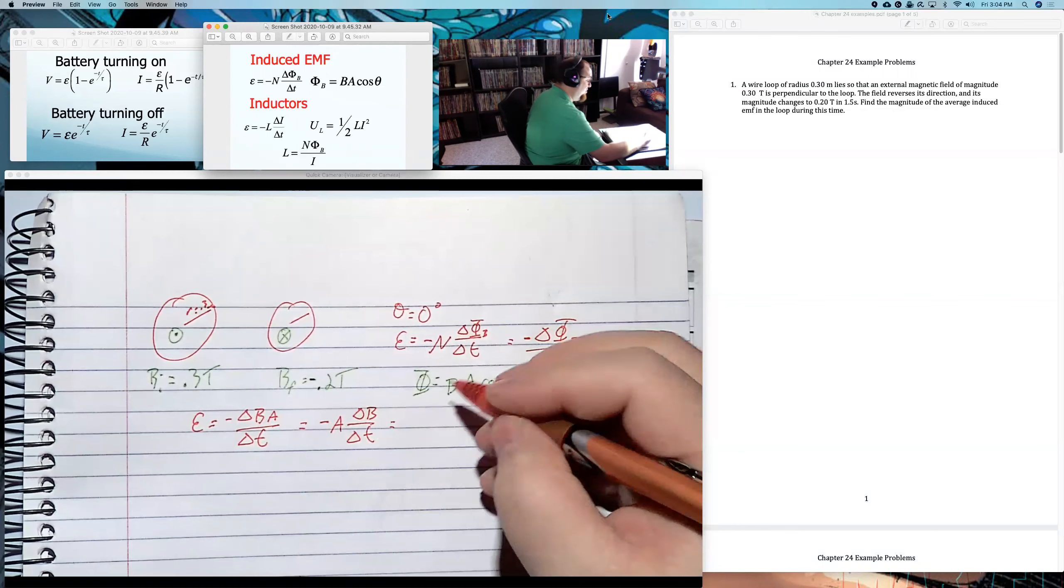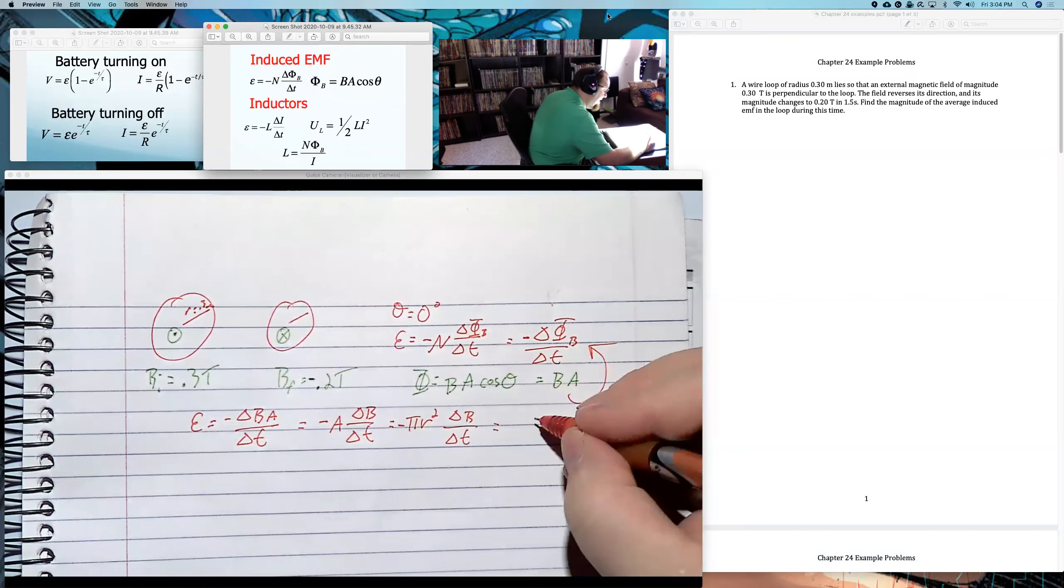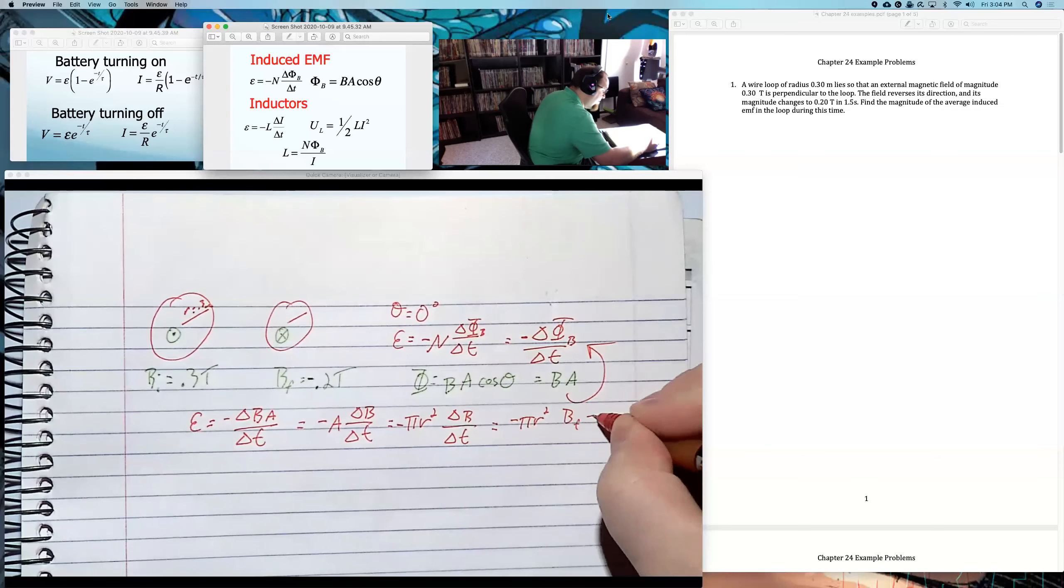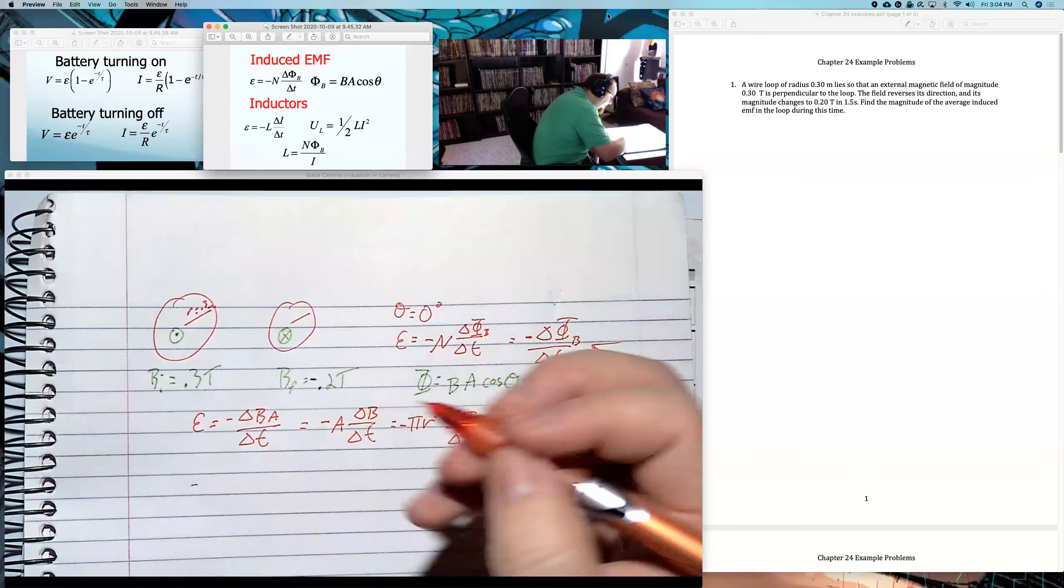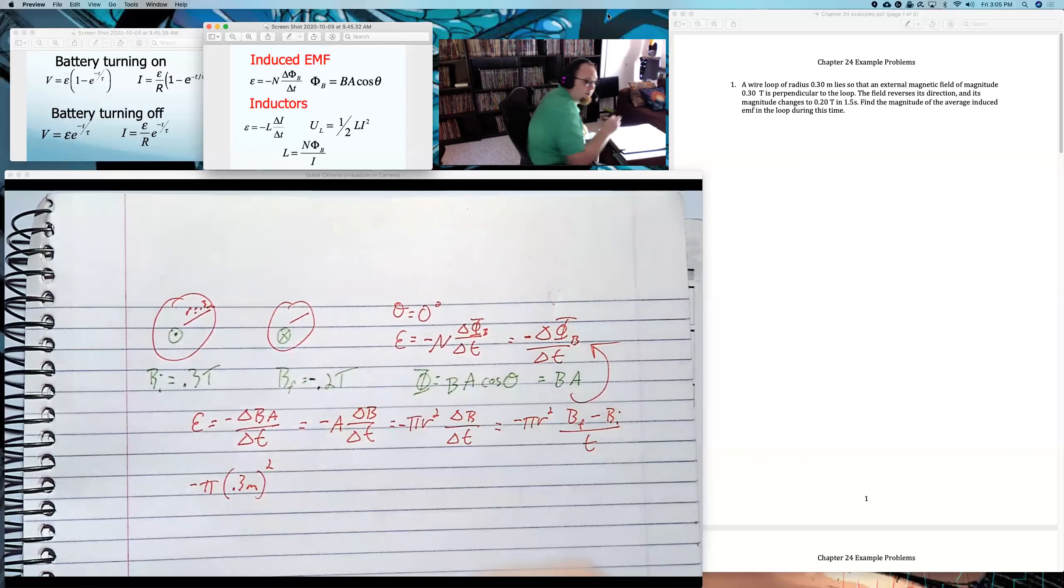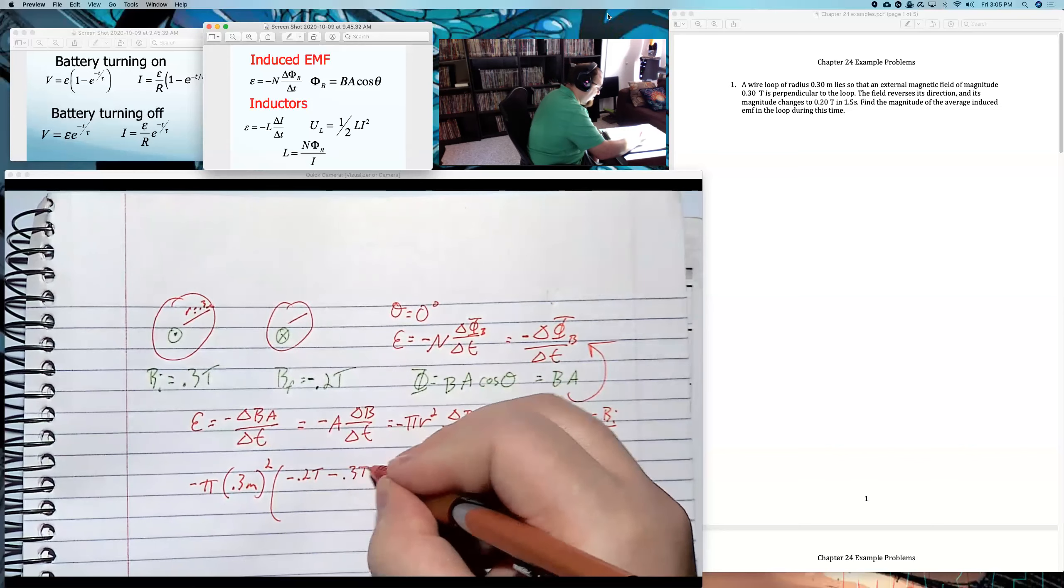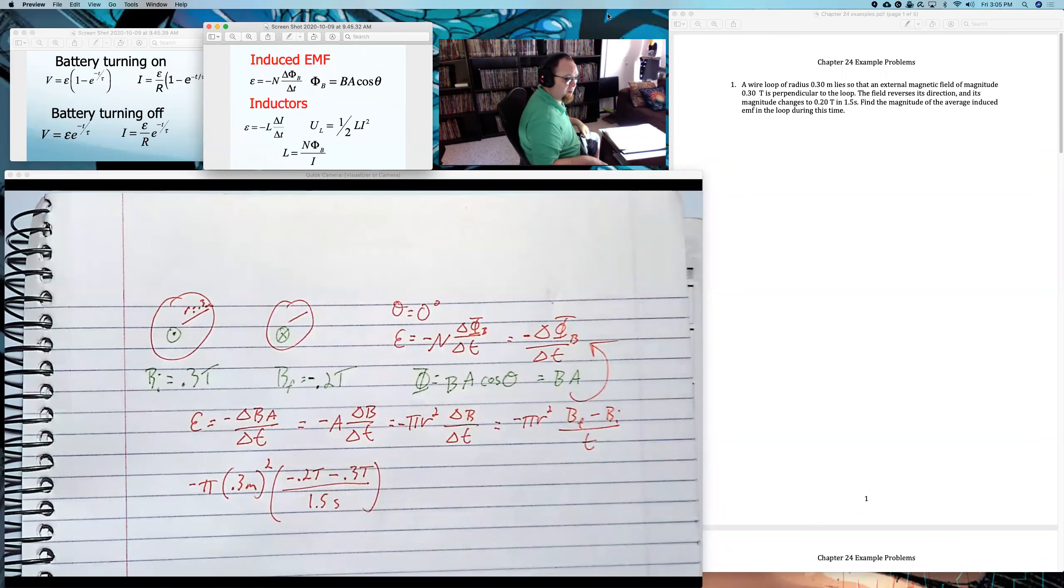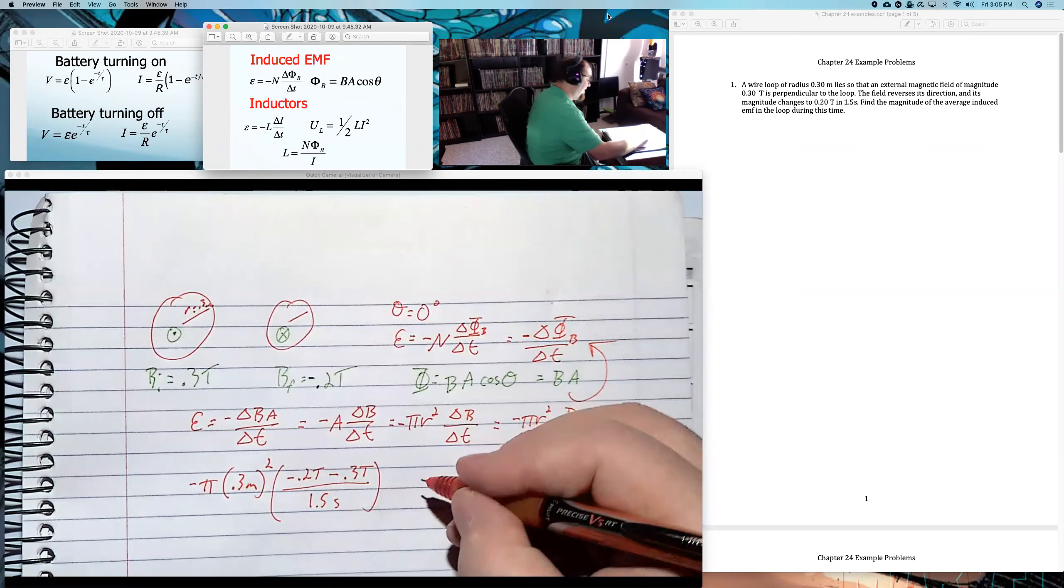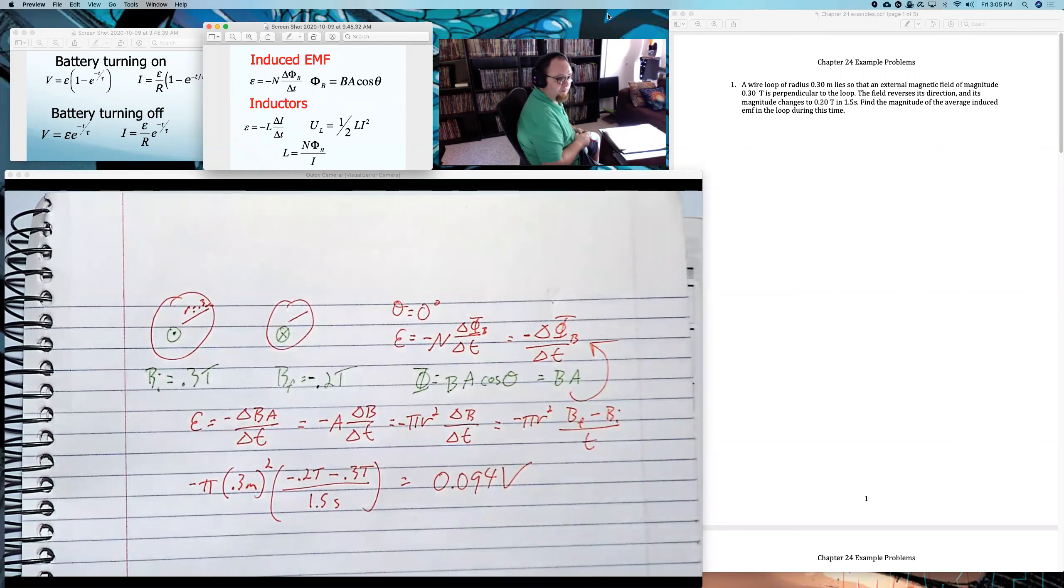Now, area, it's a circle. It's going to be pi R squared. But delta B over delta T, what that really is, it's just going to be B final minus B initial over the T final minus T initial, the time it takes place. So it would be negative pi 0.3 meters squared times B final negative 0.2 tesla minus B initial 0.3 tesla over the time period, 1.5 seconds. If it wasn't for the pi, this would probably work out kind of nicely. But if I do this math, and I can plug these in, I'll get an answer.